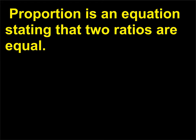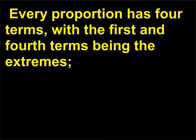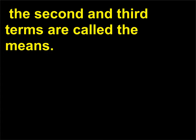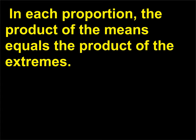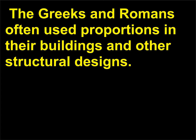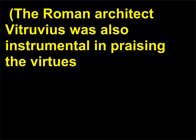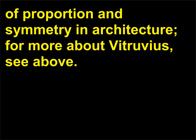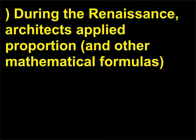Proportion is an equation stating that two ratios are equal. Every proportion has four terms, with the first and fourth terms being the extremes, and the second and third terms called the means. In each proportion, the product of the means equals the product of the extremes. The Greeks and Romans often used proportions in their buildings and other structural designs. The Roman architect Vitruvius was also instrumental in praising the virtues of proportion and symmetry in architecture. During the Renaissance, architects applied proportion and other mathematical formulas to produce aesthetically pleasing buildings whose beauty still holds true today.